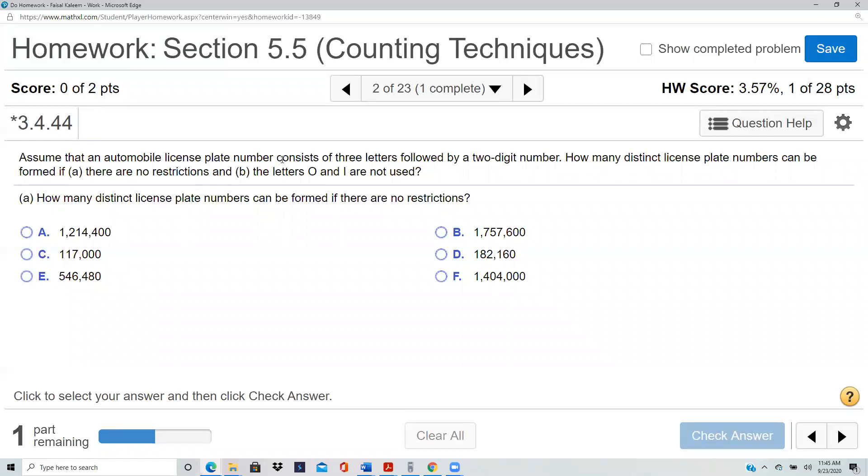Assume an automobile license plate consists of three letters followed by a two-digit number. How many distinct license plates can be formed if there are no restrictions? So let's first do no restrictions. You have three letters followed by a two-digit number.